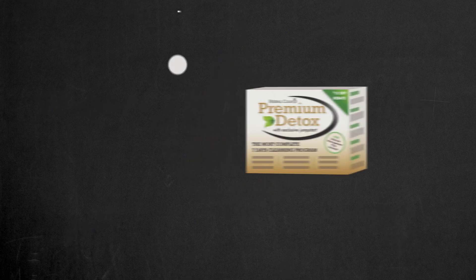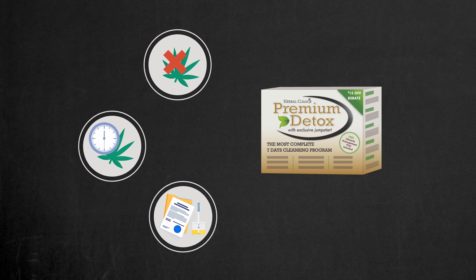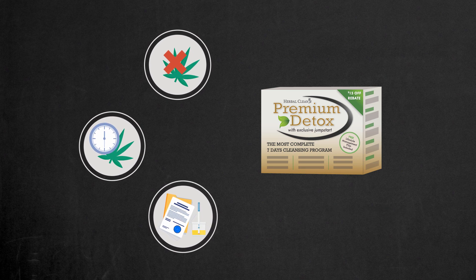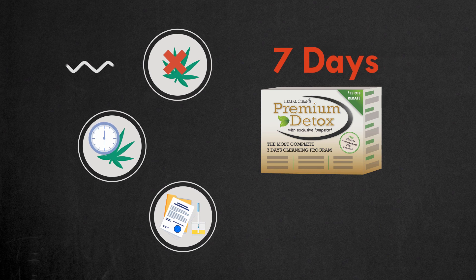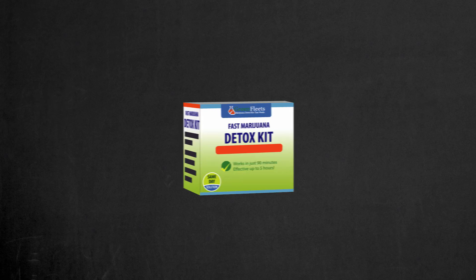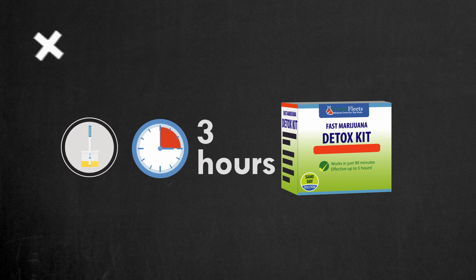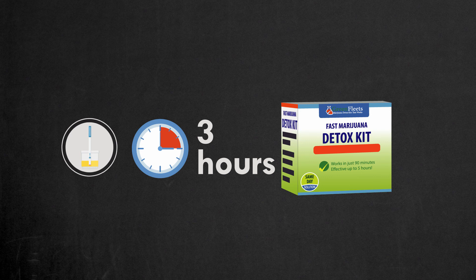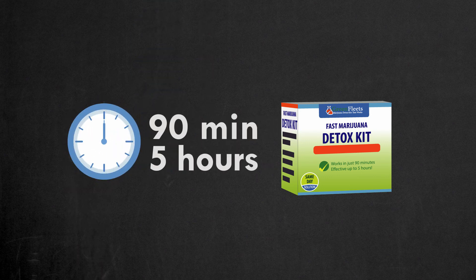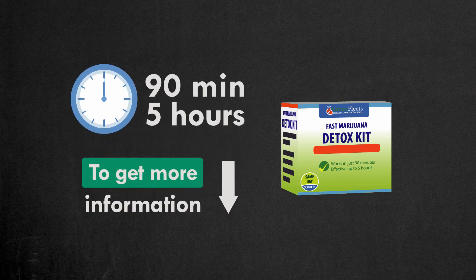Before we continue, I'd like to tell you about proven solutions that will help you to rid your system of weed. If you wish to quit marijuana or simply need a tolerance break, or if you have a big job offer on the table and need to quickly pass a drug test, this kit is for you. It will permanently clean your system from all traces of marijuana in 7 days. If you are limited in time and need to quickly pass a drug test, use the Fast Marijuana Detox Kit. It temporarily flushes marijuana metabolites out of your bladder and allows you to pee clean. The kit starts working in 90 minutes and is effective for up to 5 hours. To get any of these kits, follow the links in the description.